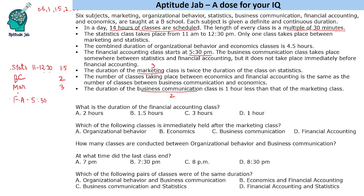That's what the order looks like. Now we use the remaining clue: the number of classes between economics and financial accounting is the same as the number of classes between business communication and economics — meaning economics must be exactly between business communication and financial accounting. But in this arrangement everything is perfectly balanced, so we cannot insert any class. This case is not possible, as we cannot satisfy both conditions.